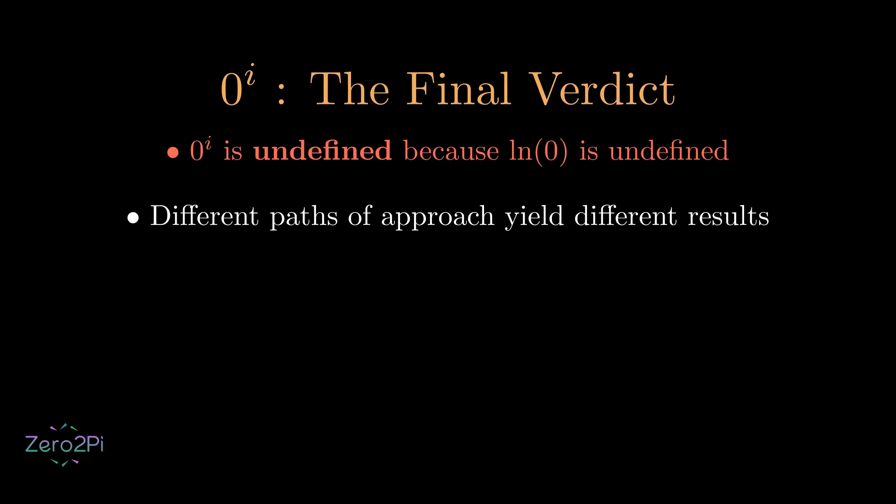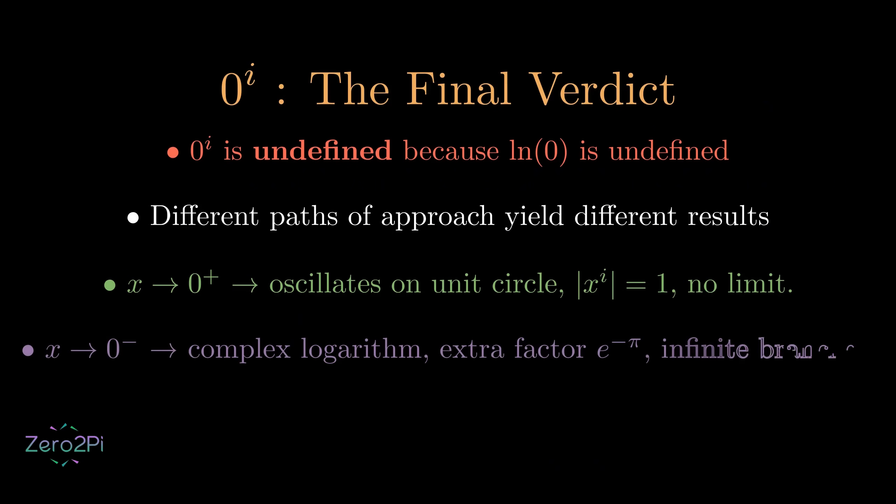Moving to our final verdict. First, we must conclude that the expression is formally undefined, because the natural log of 0 is undefined. But the story does not end here. We've shown that different paths of approach give wildly different results. Approaching from the positive side causes an endless oscillation on the unit circle, meaning the limit does not exist. Approaching from the negative side requires the complex logarithm, introducing an extra factor of e to the power negative π, and revealing infinite branches of possible answers. Ultimately, this path dependence is what makes 0 to the power of i fascinating and truly undefined. It shows that in mathematics, sometimes the journey and the reasons why a single answer can't exist are far more beautiful than the answer itself.